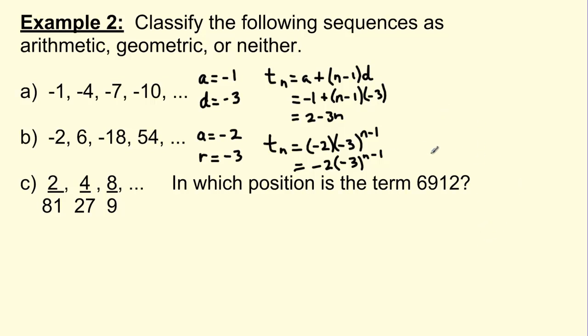So the first was arithmetic, the second was geometric. What about the third? 2 over 81, 4 over 27, 8 over 9. So not only am I now asking, is this arithmetic, geometric, or neither? But once you figure it out, I want you to find what the general term is, and then figure out in which position the term 6912 is. Don't be confused. I don't want to know what the 6912th term is. I want to know where, or what term number 6912 is in this sequence. I'm going to leave that for you to figure out, and we will take this question up in class.